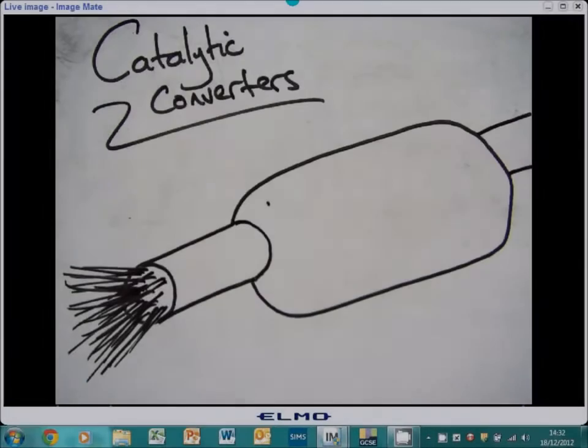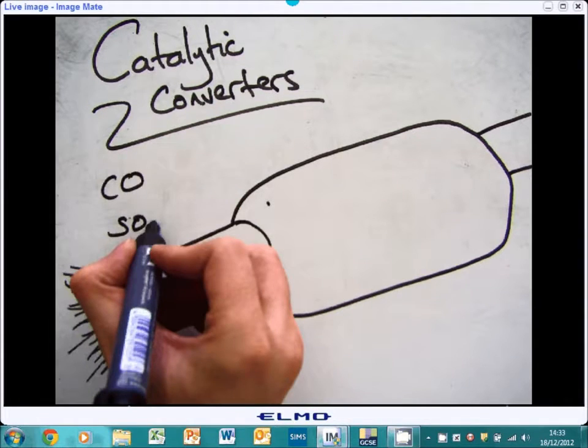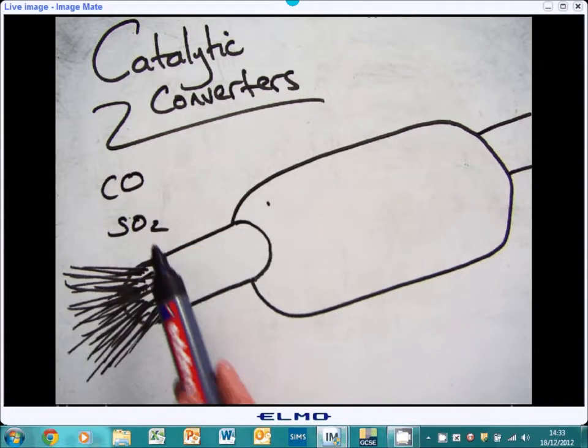A key example of where catalysts are used is in catalytic converters in cars, inside the exhaust system. Without a catalytic converter, when combustion inside the engine occurs, gases such as carbon monoxide and sulphur dioxide can be produced. Sulfur dioxide can lead to acid rain and carbon monoxide is poisonous.